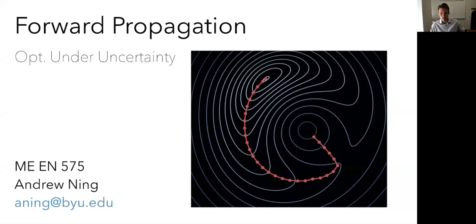The last two times we talked about how uncertainty can affect the constraints as well as the objective. We looked at how we might reformulate our constraints so that we weren't getting a lot of failures under that uncertainty — we made them more reliable. We also looked at different ways we might formulate the objective, considering things like the mean, variance, and other statistics of interest that can give us a design that is less sensitive to variation.